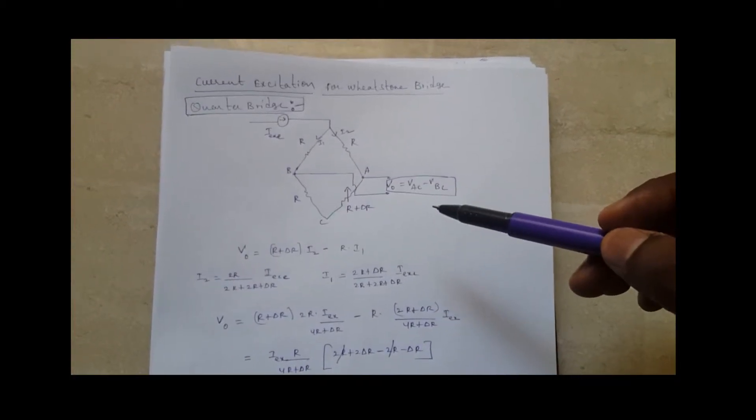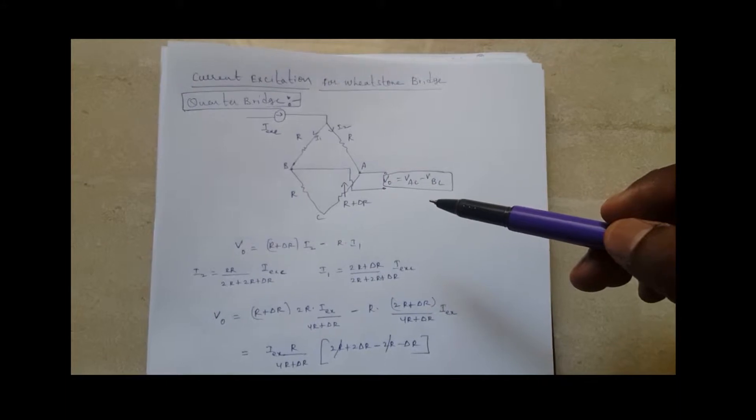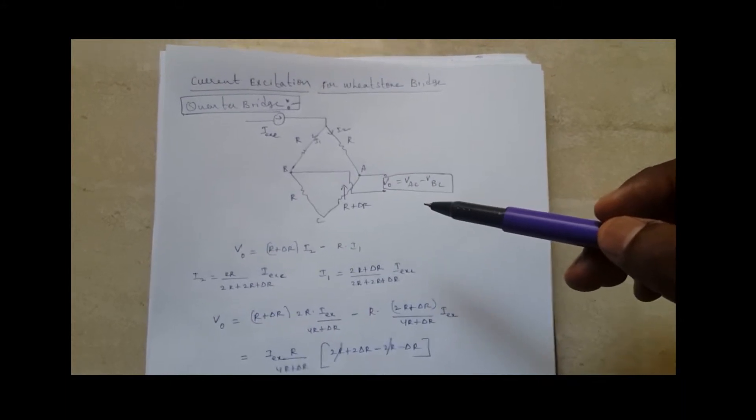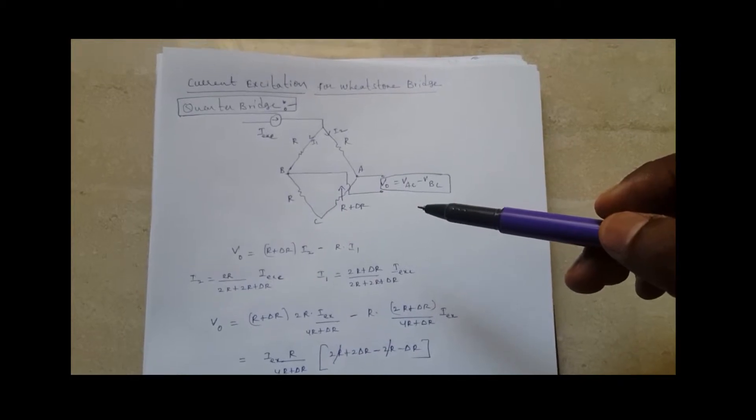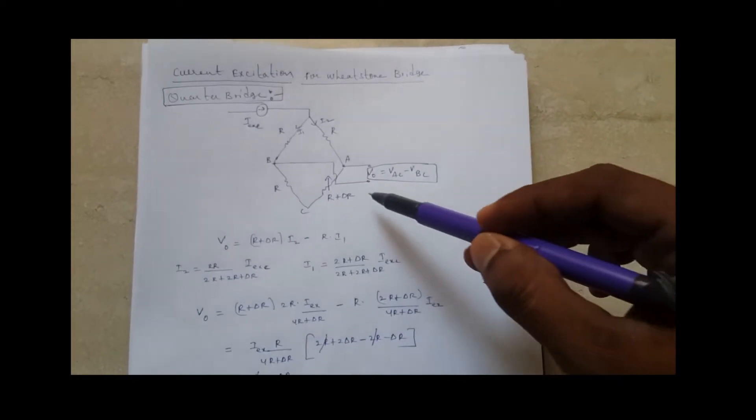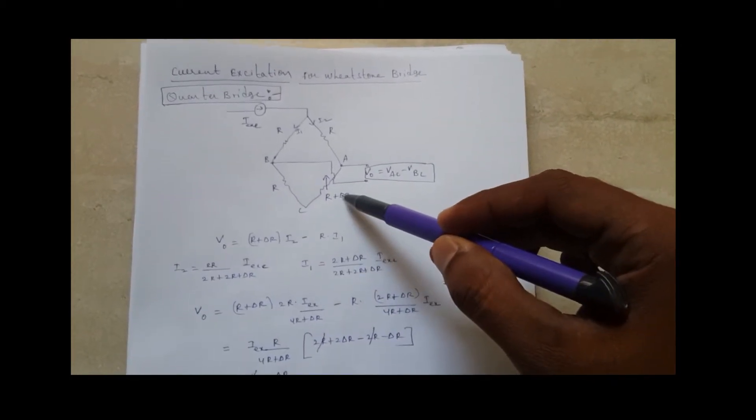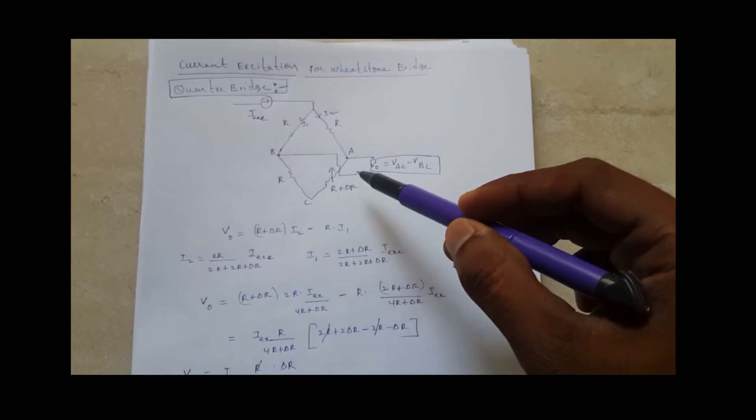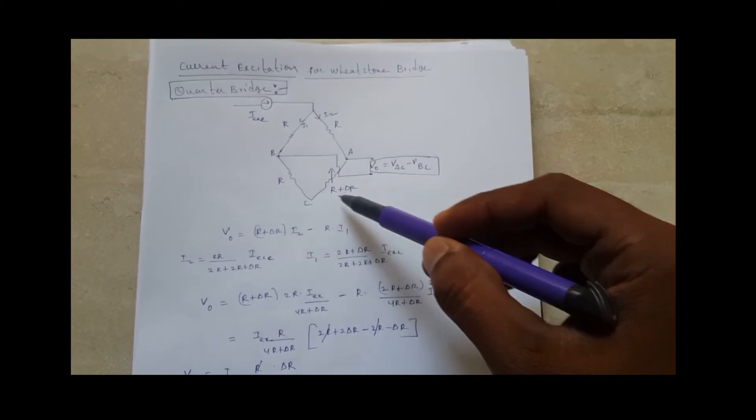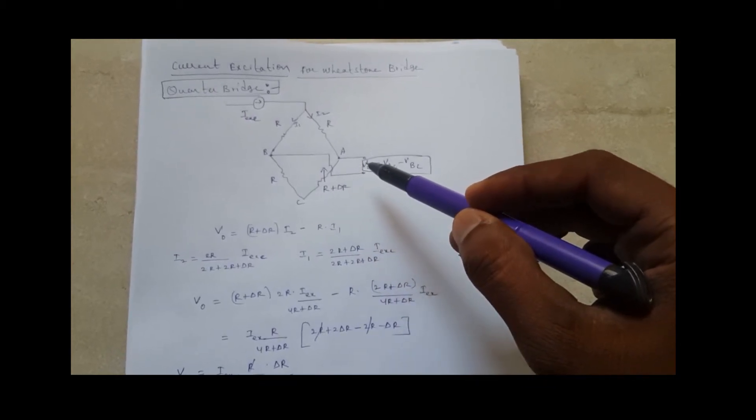In this video I am discussing the Wheatstone bridge which is excited by a current source. Here we are discussing quarter bridge, which is also known as single element bridge. This is the single element whose resistance will be proportional to an external variable. So whenever this external variable changes, the resistance will change and the bridge will produce the output that is proportional to the external variable.